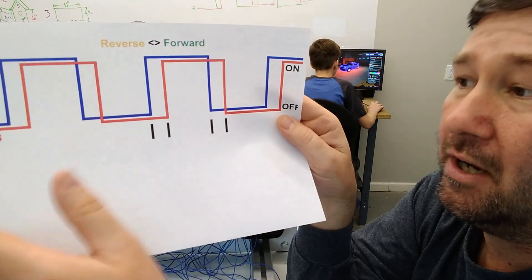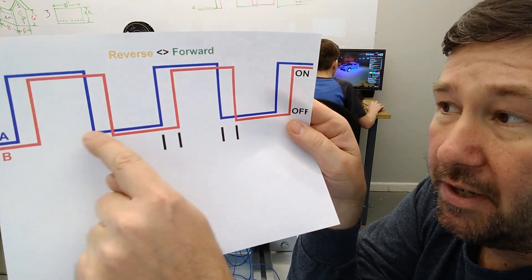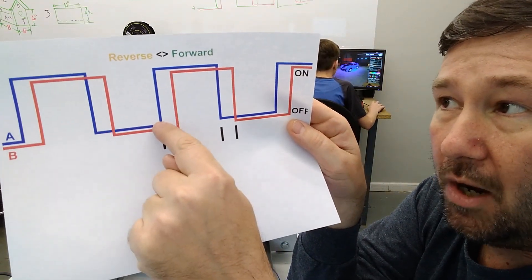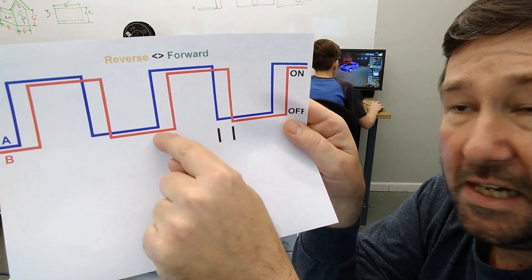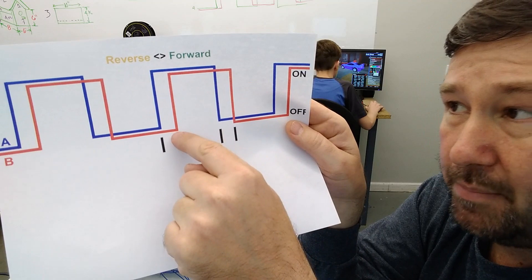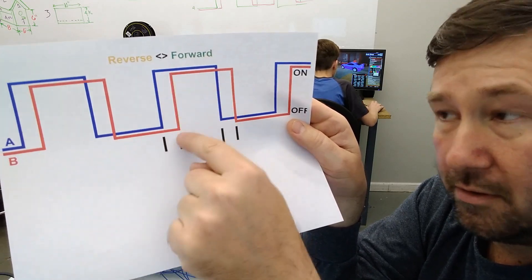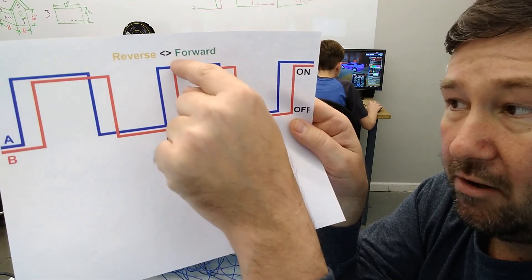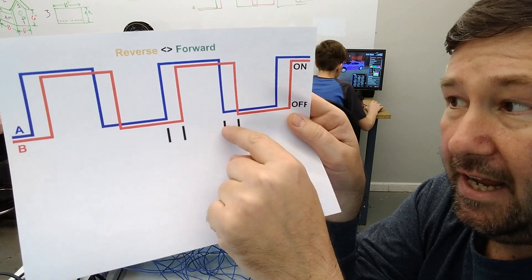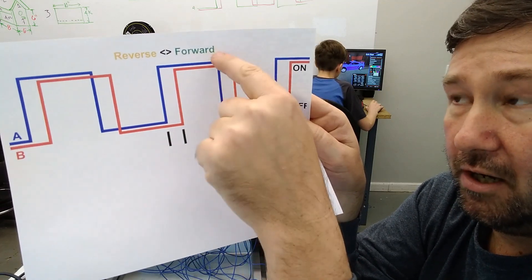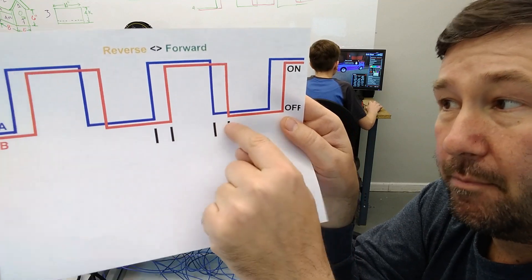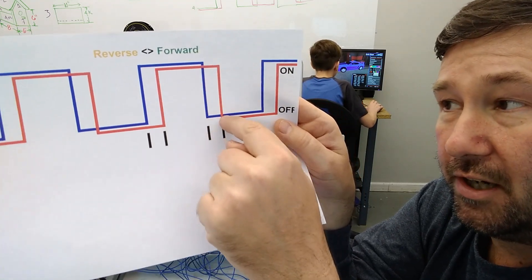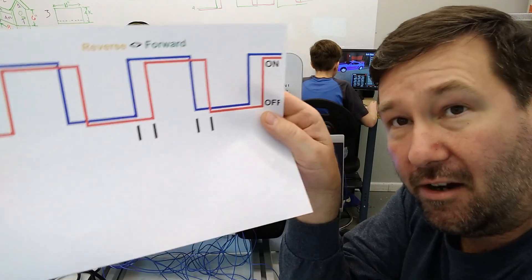And this is that quadrature part that you hear about in a quadrature encoder. First, we have A going from off to on or on to off with B off. Then we have B going on to off or off to on with A on. Then we have A going from on to off or off to on with B on. And finally, we have B going from off to on or on to off with A off.